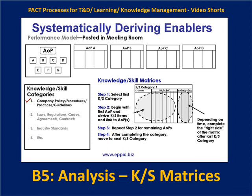If it wasn't done systematically, there's a high likelihood of gaps in the data — and you'll only find out about those gaps after design and development, once course materials are already out there. That's why we do this systematically: to avoid missing things. We start with one knowledge and skill category, march through all areas of performance in sequence, and when done with that category, move to the next and start over again with area performance A, B, C, and D.